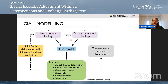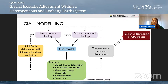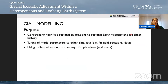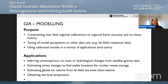We compare to observations to better understand the GIA process, to get constraints on earth rheology that can be used in many other applications, and to get constraints on surface mass redistribution. The purpose of the GIA model is to constrain regional earth viscosity and ice sheet histories, tune the model parameters, and provide a calibrated model that can be used for a variety of applications for the end user. Applications of a GIA model are basically almost endless — for example, to estimate hydrological changes from satellite gravity data, but also estimating stress changes to find stable locations for nuclear waste storage or obtaining sea level projections.